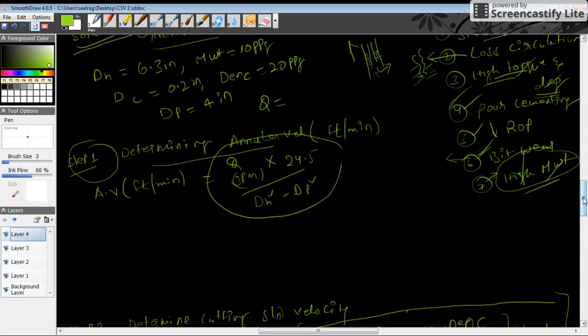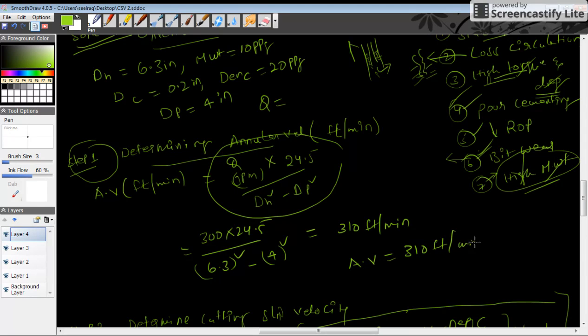We'll incorporate the same values in this formula: Q is 300 divided by 24.5, diameter of hole is 6.3 square minus diameter of drill pipe OD is 4. If we calculate this, it comes around 310 feet per minute. So annular velocity is equal to 310 feet per minute. The drilling fluid is traveling through the annulus with a speed of 310 feet per minute.